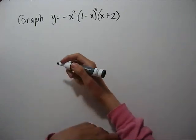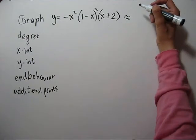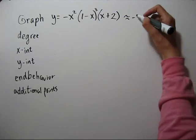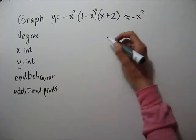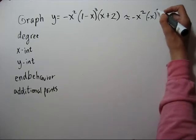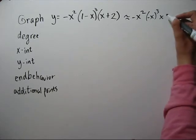Let's graph this function by degree first. We're going to have a negative x squared for our dominating term. We'll have a negative x cubed and then another x.